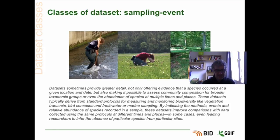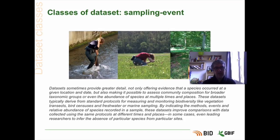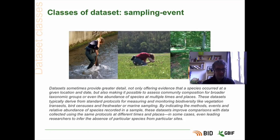The last class of dataset that can be published at GBIF is called sampling event. It's data that is obtained by applying standard protocols for measuring and monitoring biodiversity, such as vegetation transects or marine sampling. The use of protocols allows comparison because they can be repeated in time and space. In such datasets, the main entity is a sampling event with attached information such as the relative abundance of several species, but also environmental data, and for example the description of the protocol that was used.